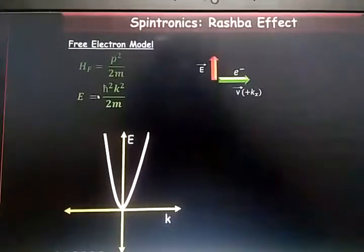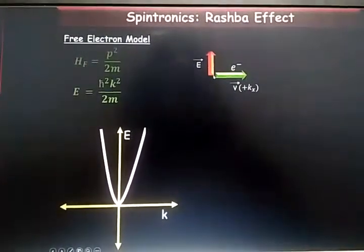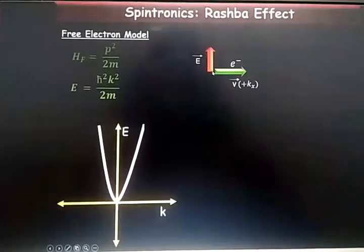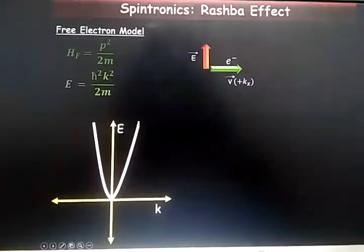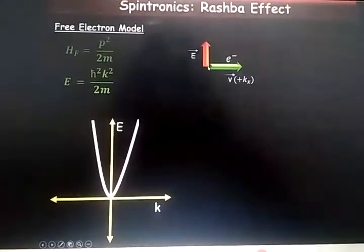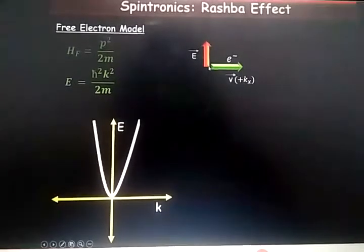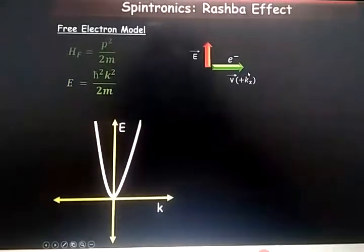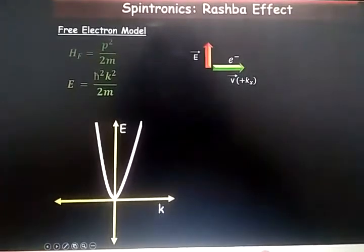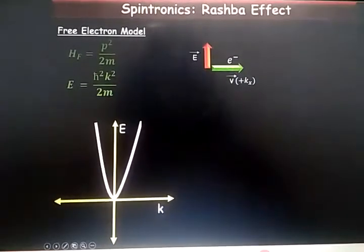Now, let us think that you have an electron which is moving with a relativistic velocity, which means the velocity of this electron is comparable with the velocity of light. And in this system, you apply an electric field. It can be external or it can be internal electric field.